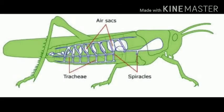Insects like grasshoppers and cockroaches breathe through air holes on their bodies. These holes are called spiracles.